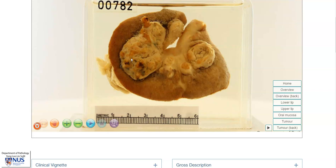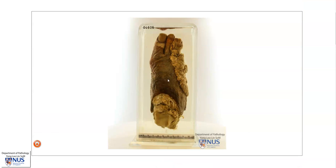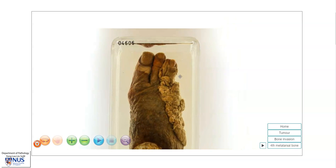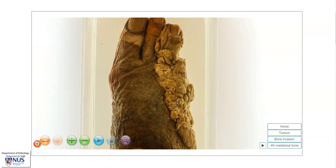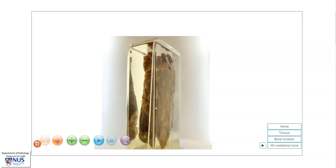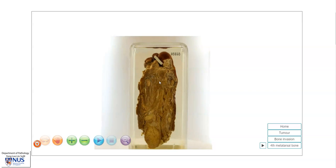Let's look at another example of squamous cell carcinoma. This time, the tumour is involving the right foot. This is a very destructive tumour that has destroyed the last two toes, and it is a fungating mass that is arising from the surface of the skin. We can see on the deep surface that it is eroding into the metatarsal bones.